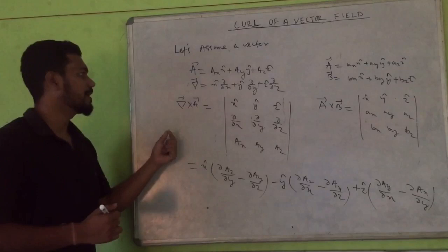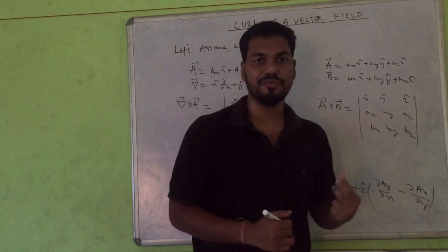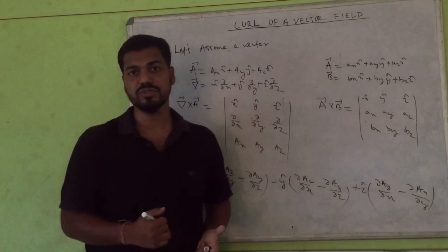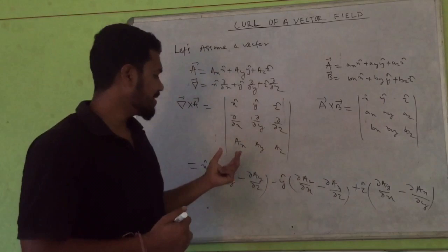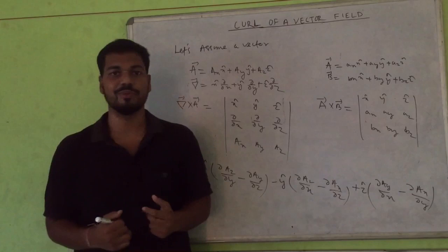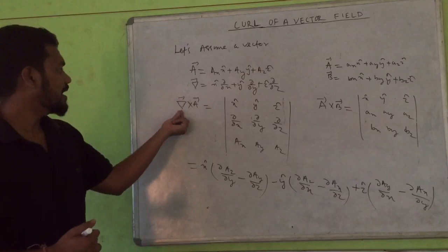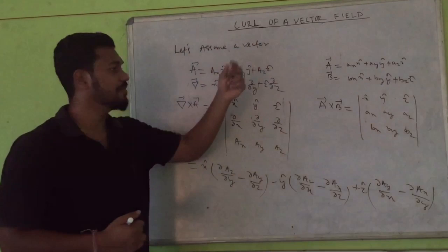Let us see what the result of a curl is. When we operate the grad operator on a scalar function we get the gradient — a vector. When we take the dot product of the grad operator with a vector we get the divergence — a scalar. And here, the cross product of the grad operator with a vector results in a vector quantity. So the curl of a given vector field results in a vector quantity.